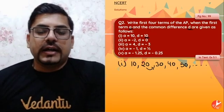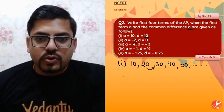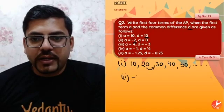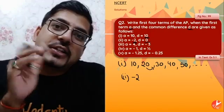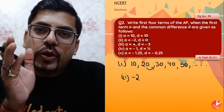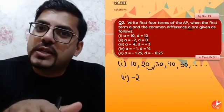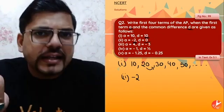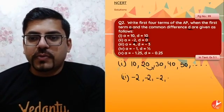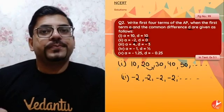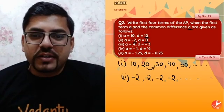Ab agla dekhte hain. Agla question mein first term hai minus 2 — toh first term minus 2 chal gaya. Lekin iske baad D jo hai woh zero hai, matlab every time you have to add zero only. Toh agar every time you add zero, pakki baat hai ki agla term bhi minus 2, uske baad bhi minus 2. So we write: -2, -2, -2, -2... All terms are minus 2.